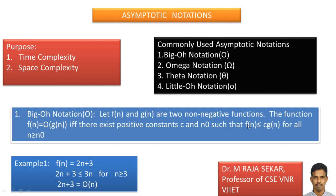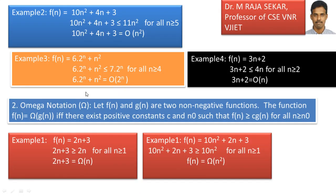It is satisfying the definition: f of n less than or equal to c into g of n, where f of n is 2n plus 3, c is 3, and g of n is n. Therefore I can write f of n equal to big O of g of n, that is 2n plus 3 equals big O of n.